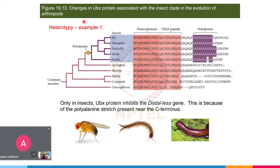The solution involves the ultrabithorax (UBX) protein and its sequence. Via a heterotypic change, a polyalanine stretch was introduced into the UBX protein of a particular set of insects that have six legs — fly, mosquito, butterfly, moth, beetle, Drosophila. This polyalanine stretch is present near the C-terminus. Other organisms such as centipede, millipede, and spiders do not have this polyalanine stretch, although the homeodomain of the ultrabithorax gene is conserved.